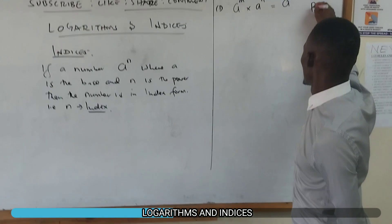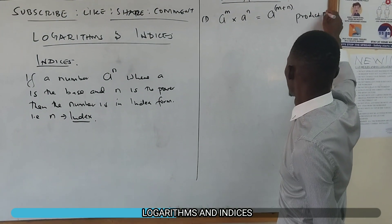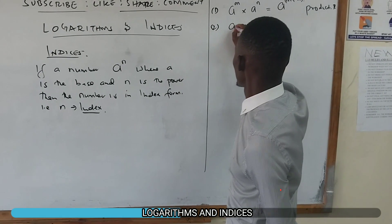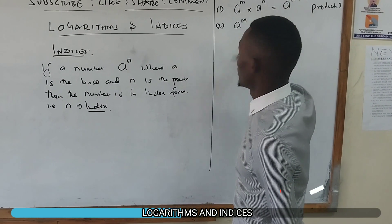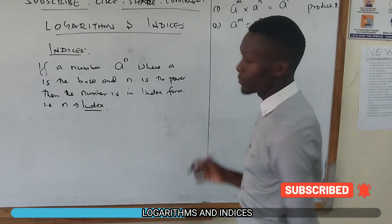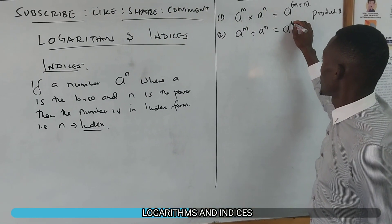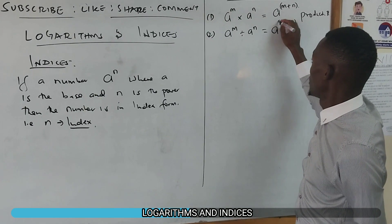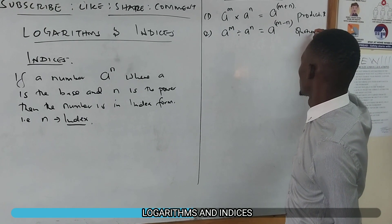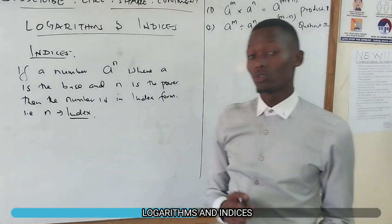This is called the product rule. Number two: if you have a number raised to power m, then you divide by the number raised to power n, then this is the same as saying a raised to m minus n. This is called the quotient rule, or the quotient law.